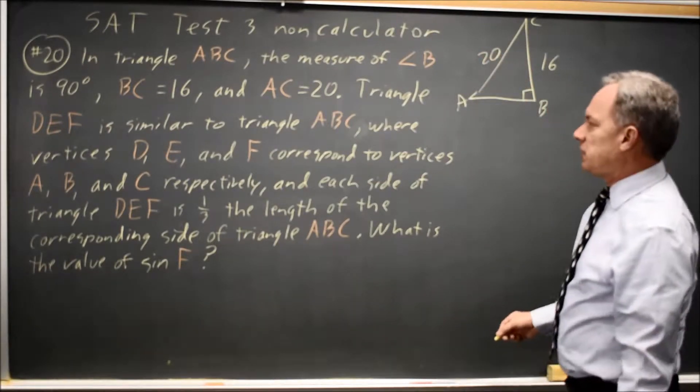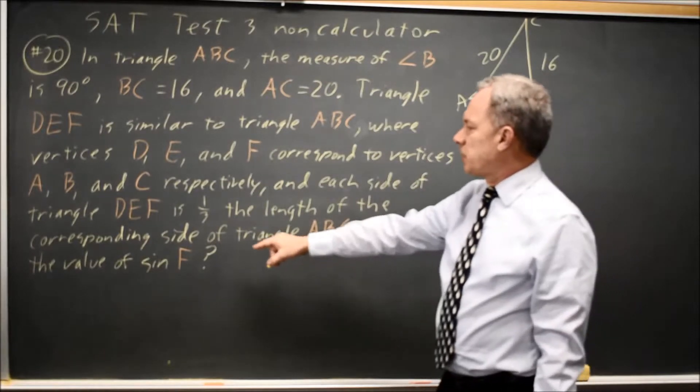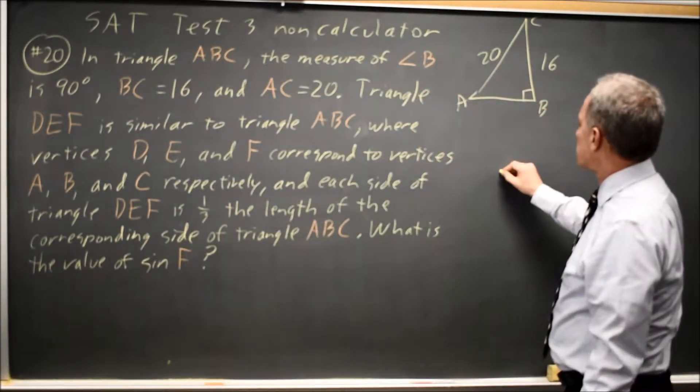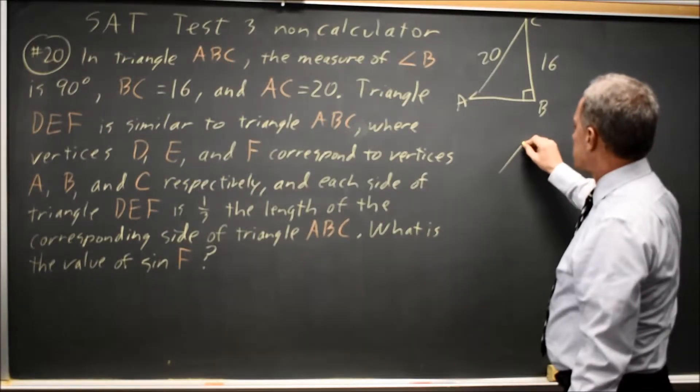Triangle DEF is similar, so same angle, same ratio of 1 third. Triangle DEF is a smaller triangle that is similar.